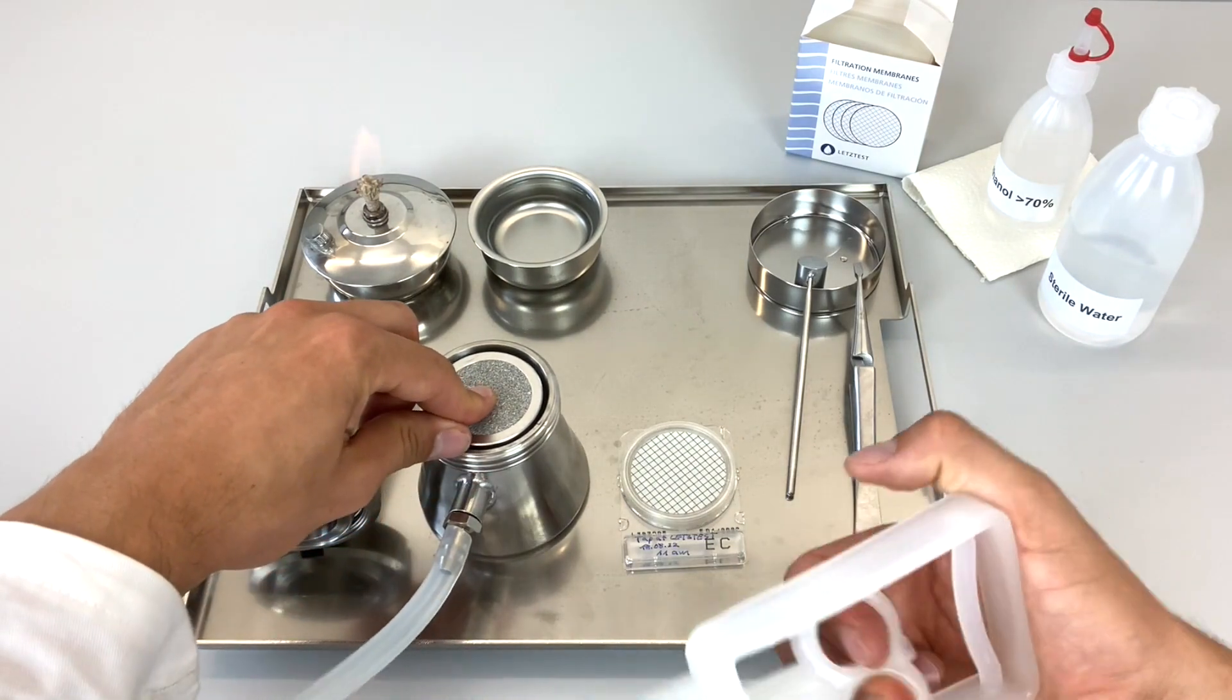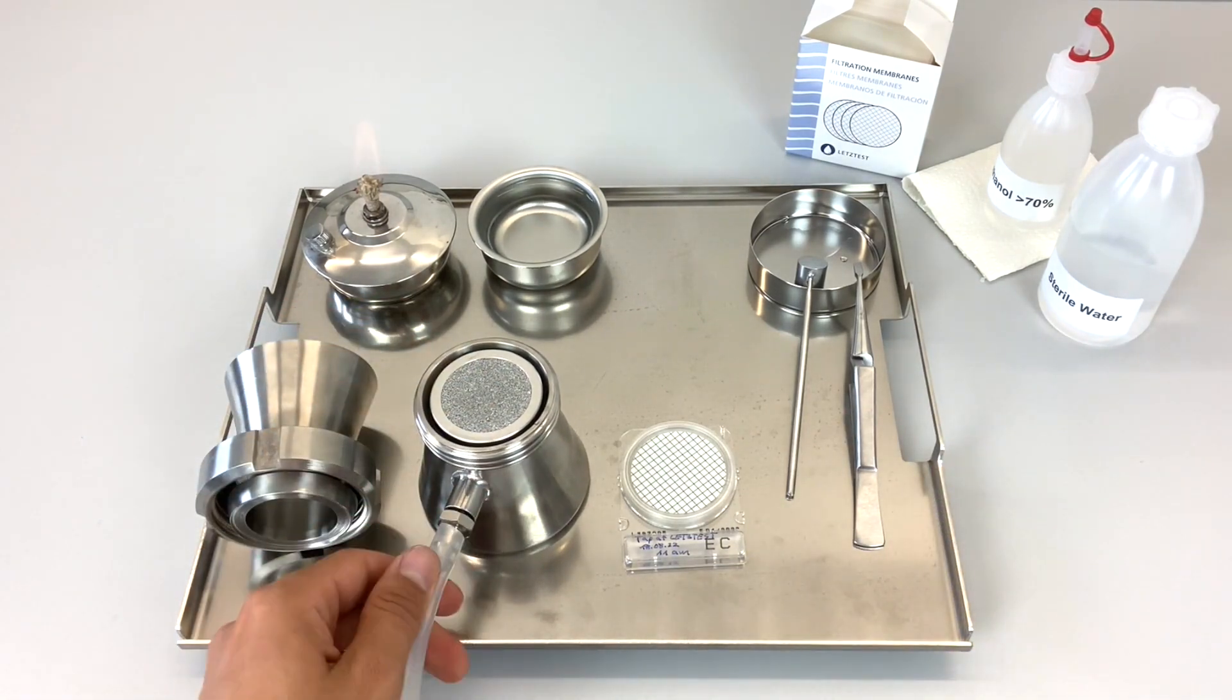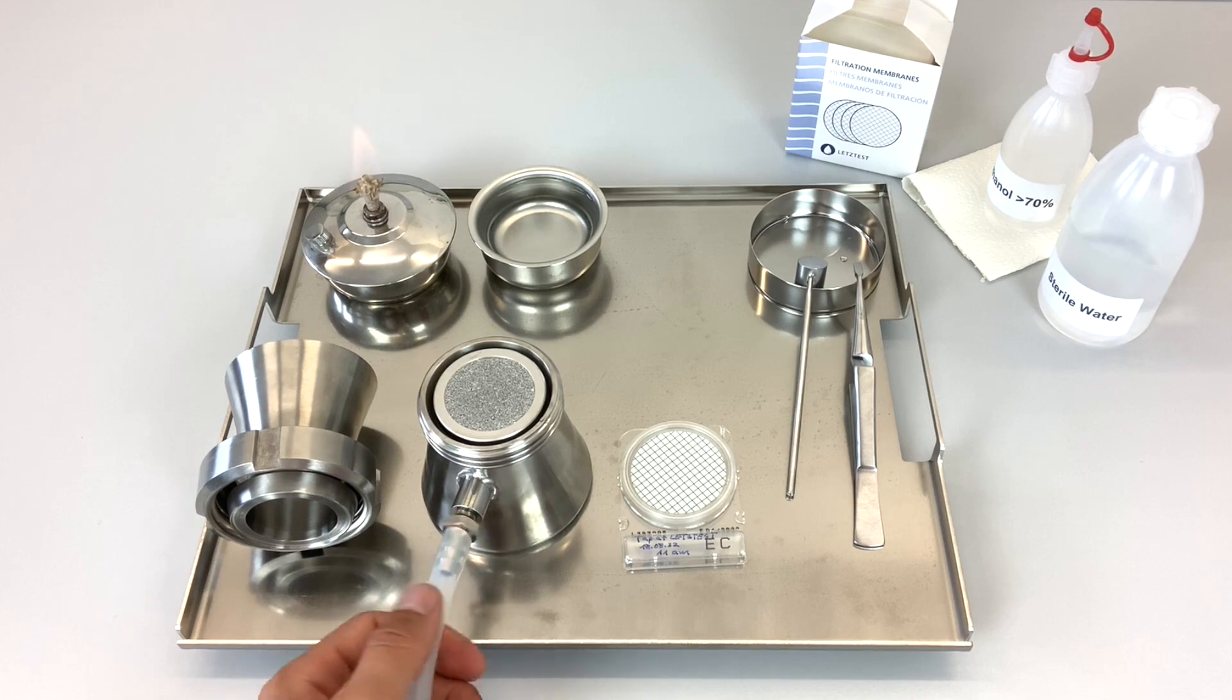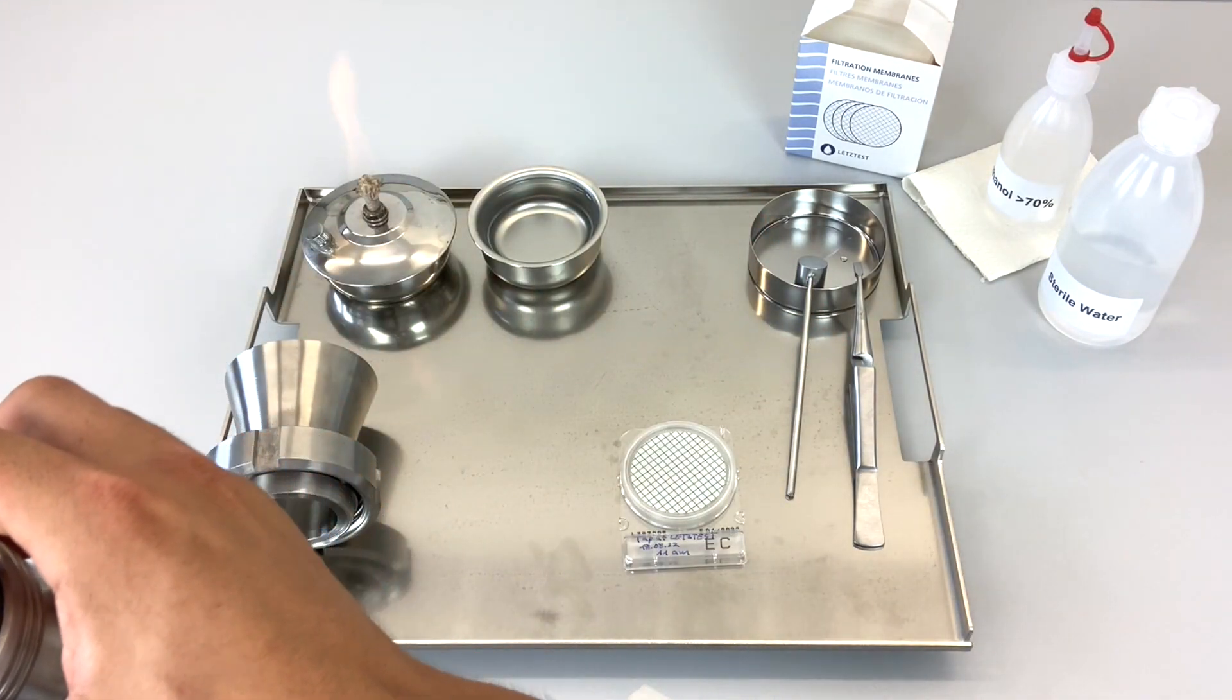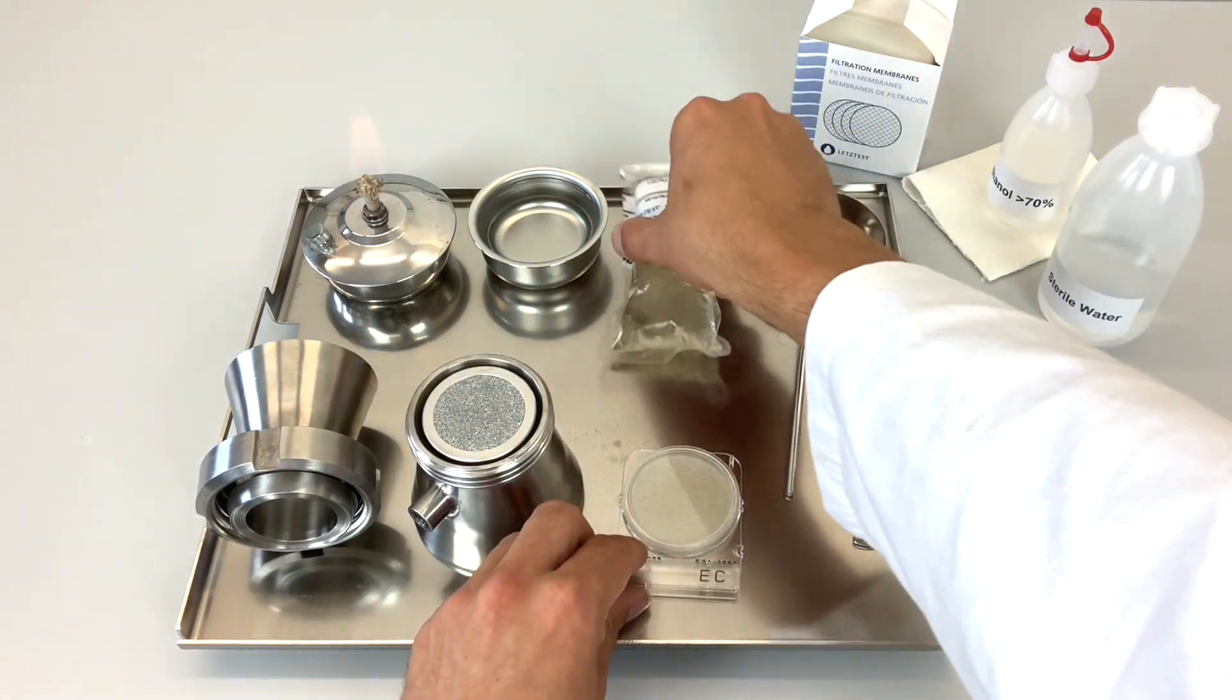As the last step, you suck out the excess water from the porous filter support. This will facilitate the next sterilization. You empty the base part and you continue with the next sample.